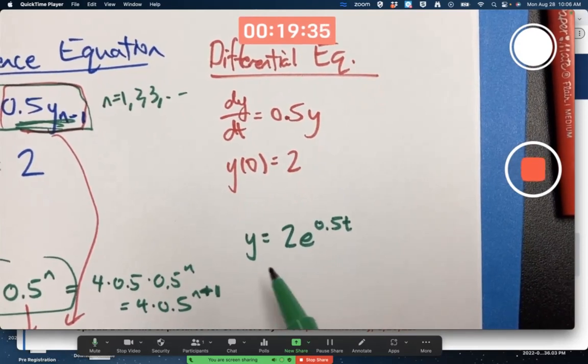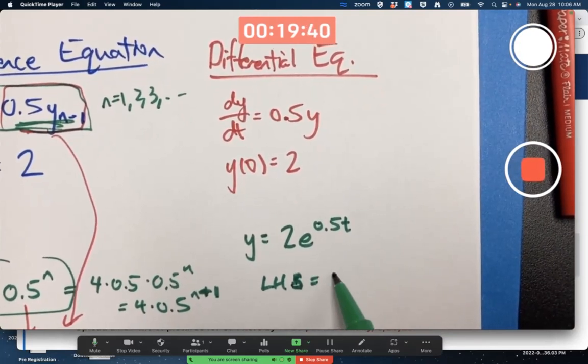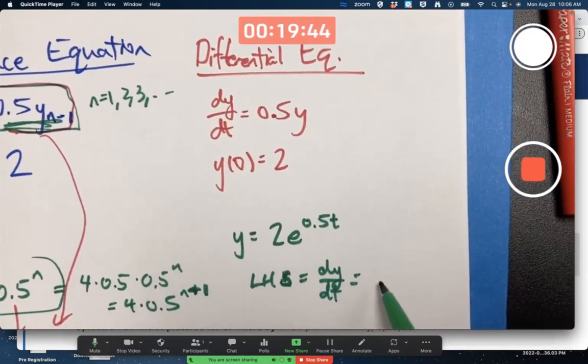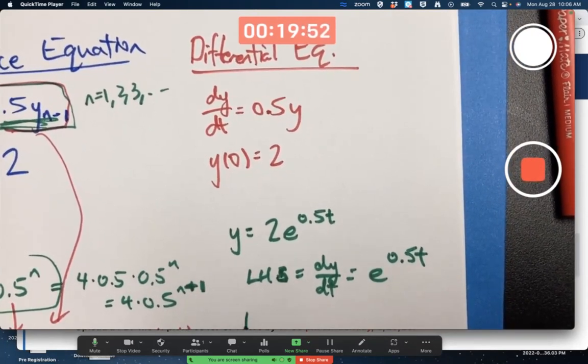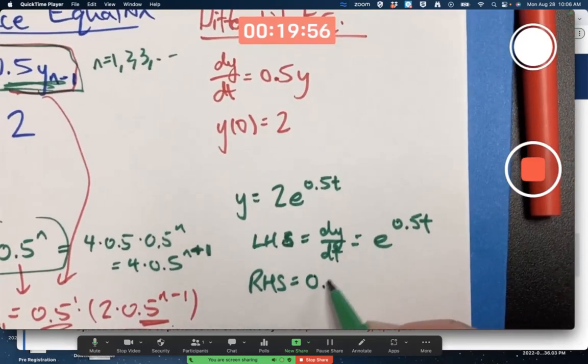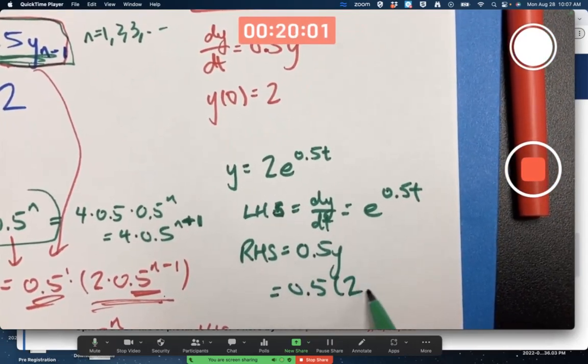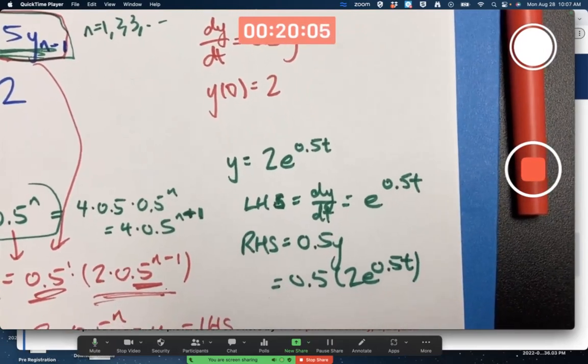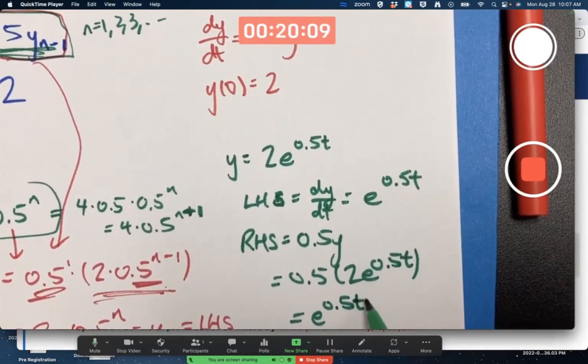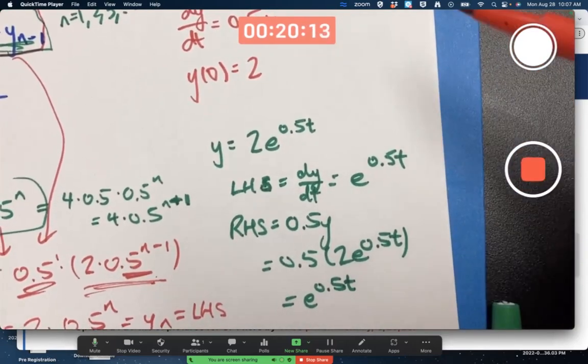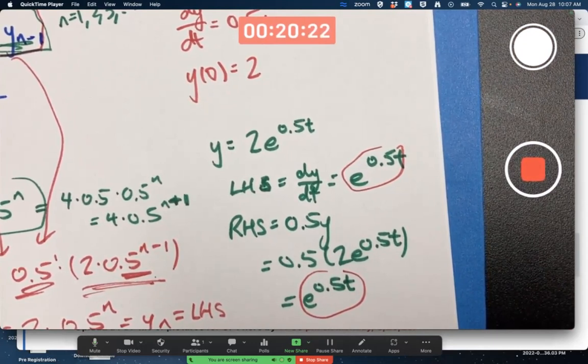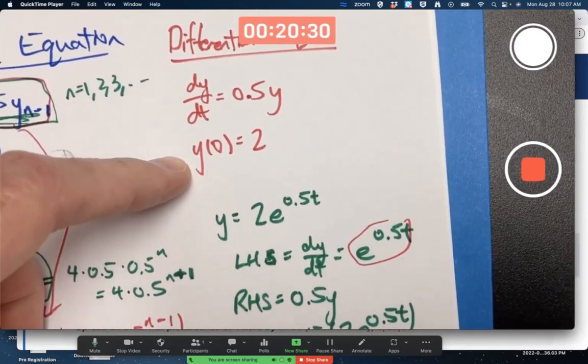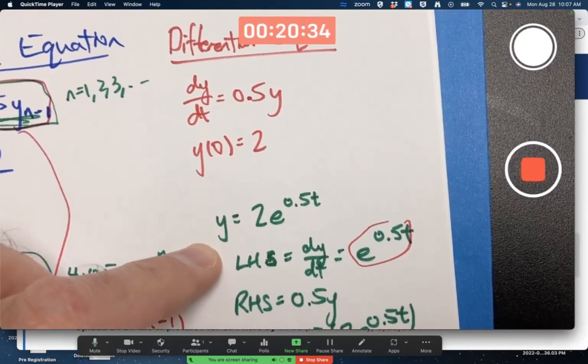That's a function whose derivative, the left-hand side of the differential equation, LHS means left-hand side, dy dt by the chain rule is e to the 0.5 t, right? Fairly easy derivative. What about the right-hand side of the differential equation? It's 0.5 times y. But what's y? Y is 2 e to the 0.5 times t. 0.5 times 2 is 1. This simplifies to the exact same thing. We're very happy. These match. That's not a coincidence. And again, if you tried some other function like t squared, it would not work.